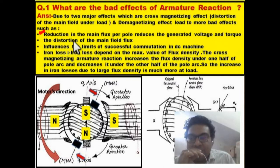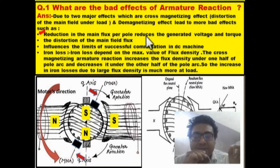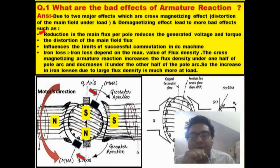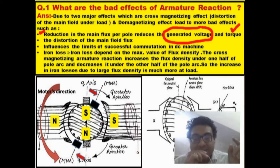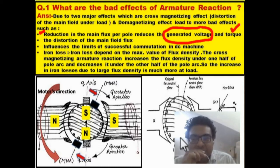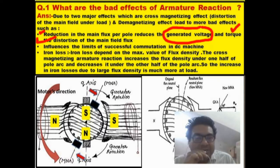Due to the distortion and reduction of main flux, what happens is: if this is a generator, then the generator voltage will decrease — there will be a reduction in generator voltage. And if it is behaving as a motor, then the motor's torque decreases, because torque is directly proportional to flux, and EMF is also directly proportional to flux. This is a very important point.